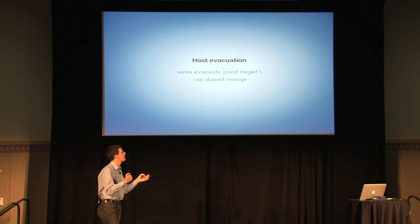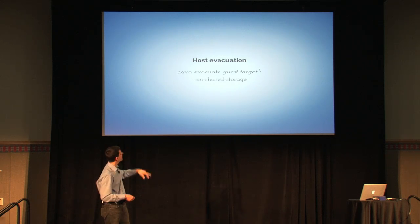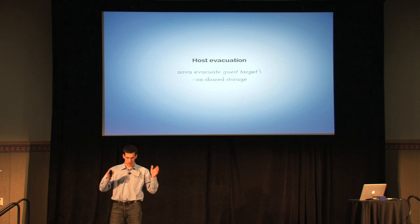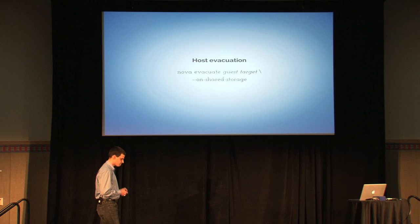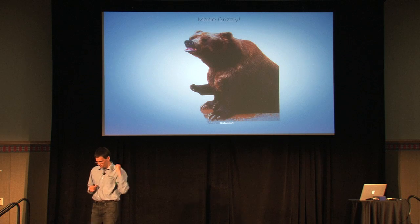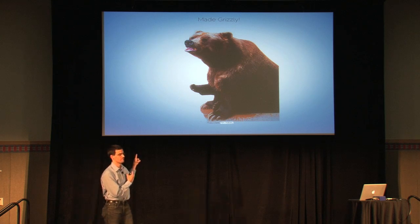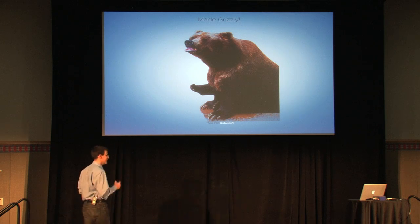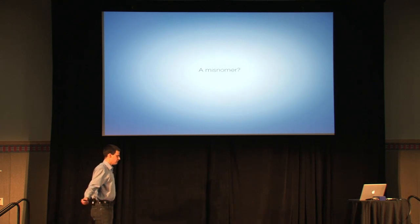Host evacuation is a new feature in Grizzly. The syntax is 'nova evacuate <name of virtual machine> <target host>'. The use case is: a physical node has gone down and you want to reassign its VMs to another host. There's also an '--on-shared-storage' flag — without it, the VM is recreated from the same image on a different node; with it, Nova knows the data lives on shared storage and just restarts the instance there.